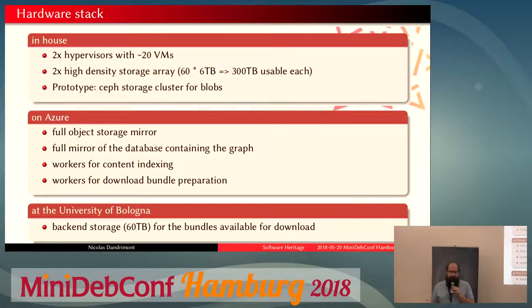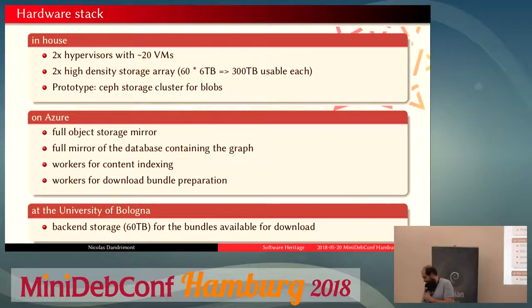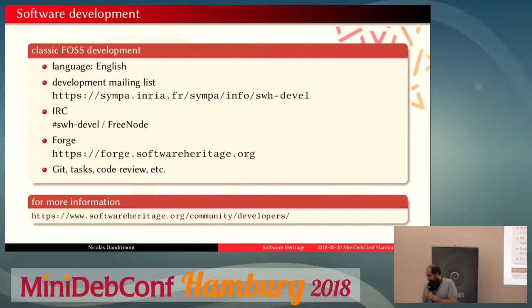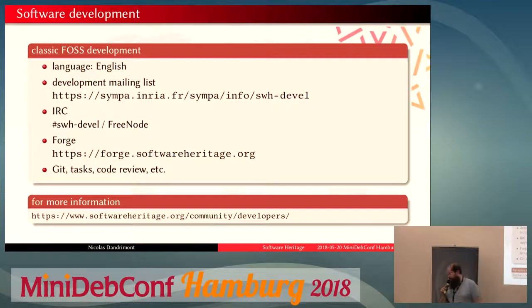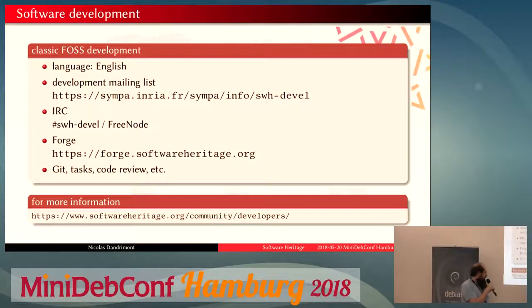At the University of Bologna we have a backend storage for downloads. Currently our main storage is quite slow, so if you want to download a bundle of things we've archived we actually keep a cache of what we've done so it doesn't take forever to download. We do our development in a classic free and open source software way — we talk on the mailing list, on IRC, on a forge. Everything is in English, everything is in public. There's more information on our website if you want to have a look and see what we do.